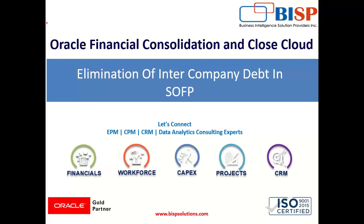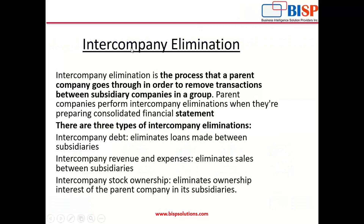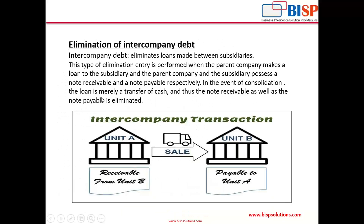Welcome to the BISB solutions. Today's scenario is elimination of intercompany debt in the statement of financial position. Intercompany elimination is a process that a parent company goes through in order to remove the transactions between subsidiary companies in a group. When preparing the consolidated financial statement, there are basically three types of intercompany eliminations: first, intercompany debt; second, intercompany revenue and expenses; and third, intercompany stock ownership. Today we are focusing on the elimination of intercompany debt.